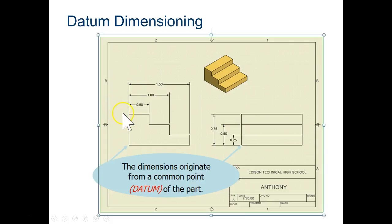The idea is if you are machining this part, everything is going to be referencing this left edge. So this will be exactly 0.5. This will be exactly one inch and the total part will be exactly 1.5. Chain dimensioning, you would see some variations on those edges.